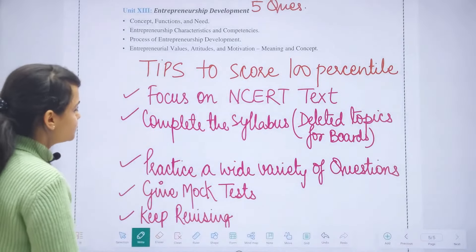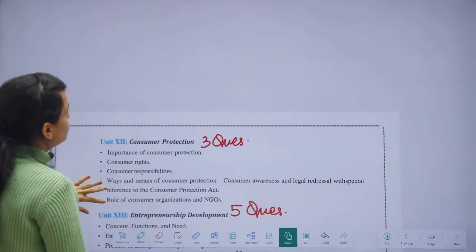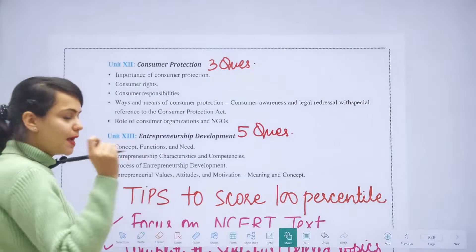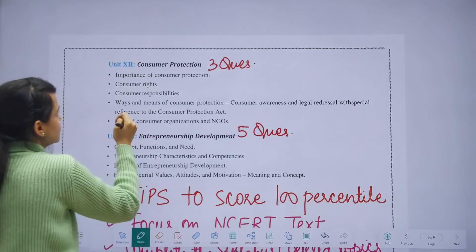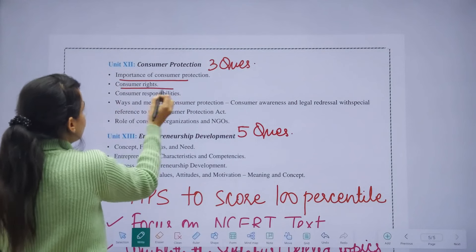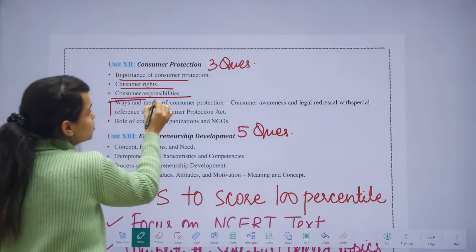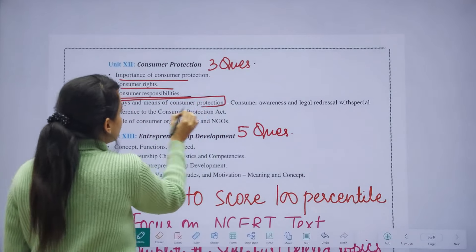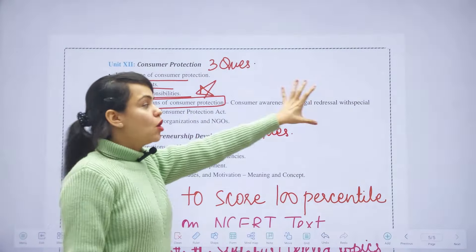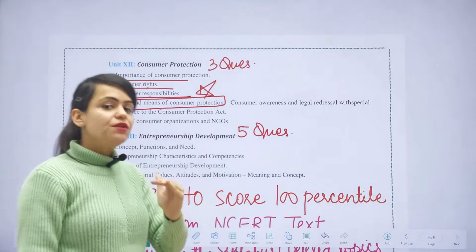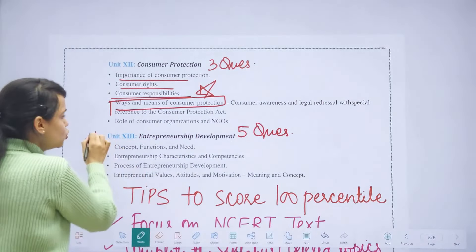In Consumer Protection, you need to study the Consumer Protection Act 2019 — three questions were asked from this chapter. Topics include importance, consumer rights, and consumer responsibilities, which you cover anyway. Ways and means of consumer protection and the role of NGOs are extra topics you need to cover, along with the redressal machinery.